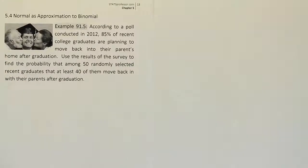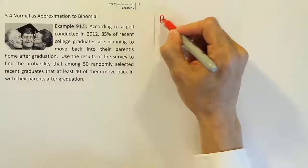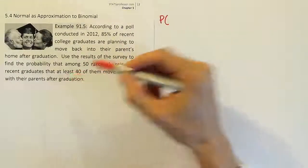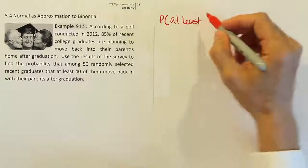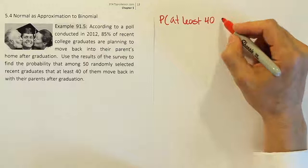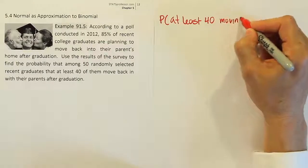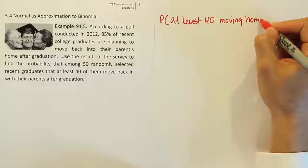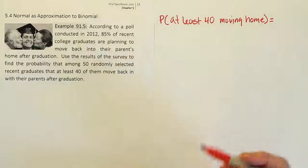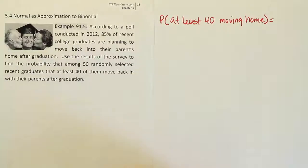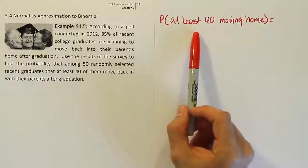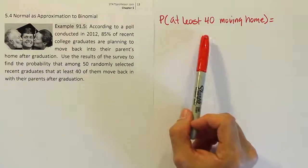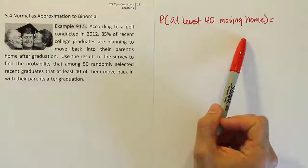This is the probability problem we're trying to answer. The probability we're looking for is the probability of at least 40 moving home. At least 40 out of 50 people who are randomly selected. What does at least 40 mean? It means 40 or more. So that's 40, 41, 42, 43, all the way up to 50.